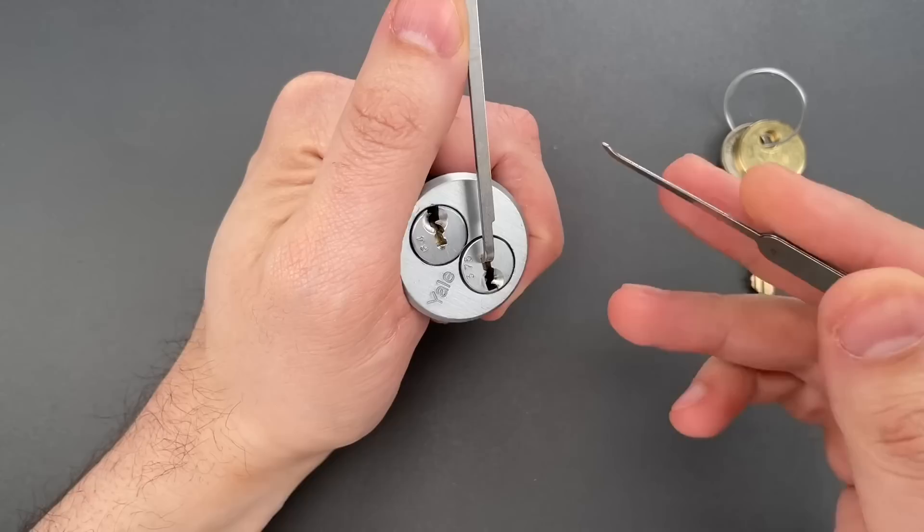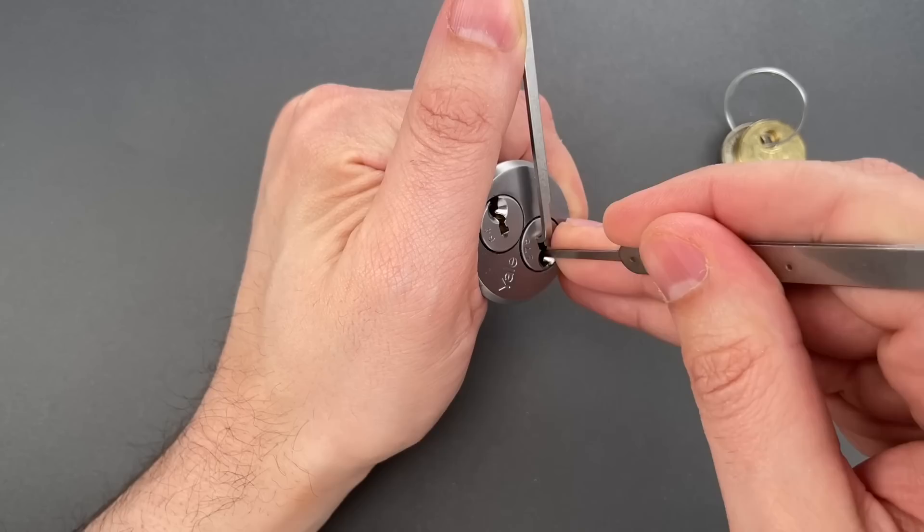I'm going to use top of the keyway tension with this 50 thousandths thick turner and a standard hook. These are both part of the Genesis set that I sell over on CovertInstruments.com.